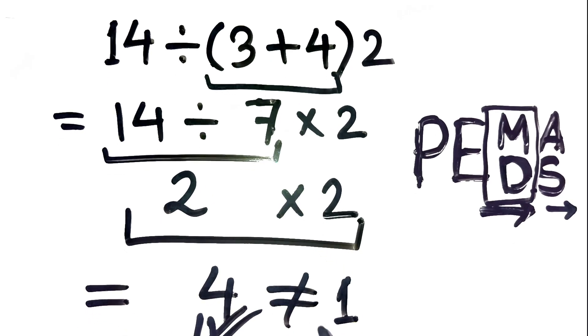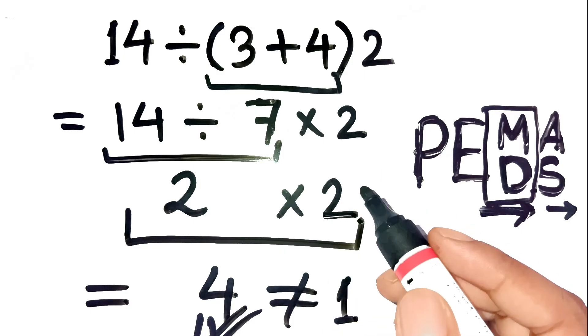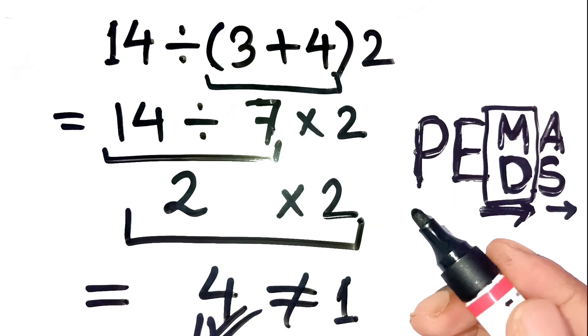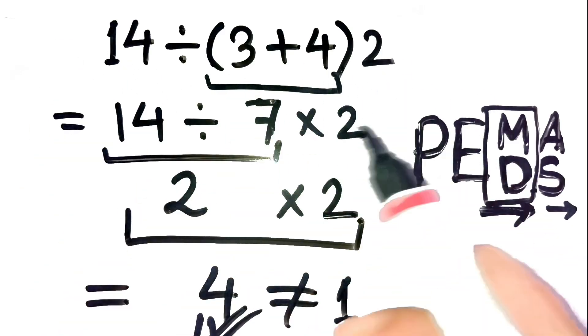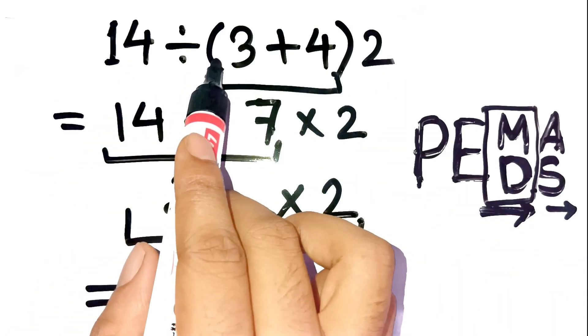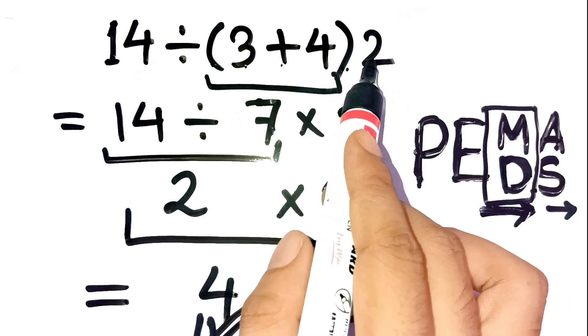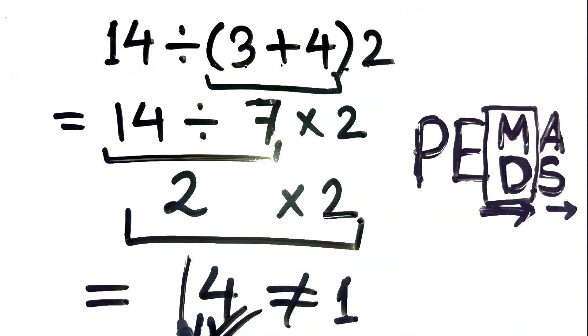Yeah, I know, it's one of those sneaky problems that look easy at first glance, but completely flip when you apply the actual rules. If you don't believe it, try typing it exactly like that into your calculator, 14 divided by open parentheses, 3 plus 4, close parentheses, then times 2, and you'll see the answer pop up as 4.